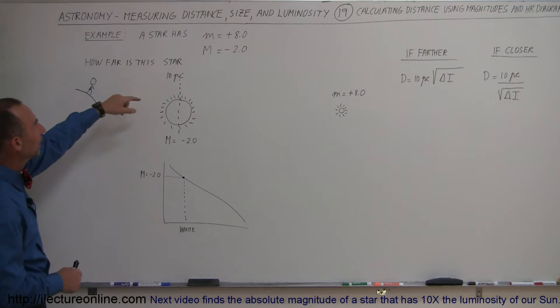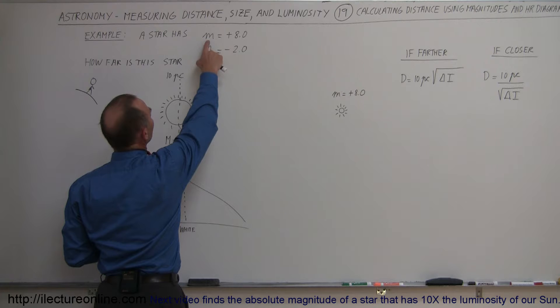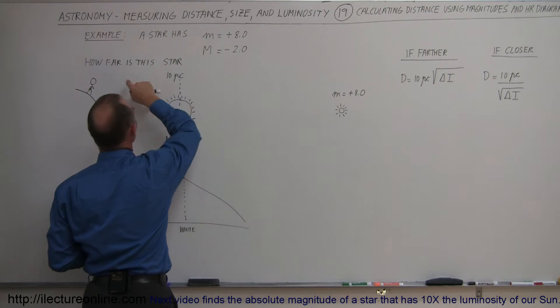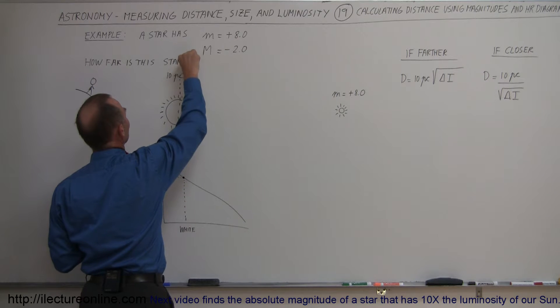Let's say we have a star that has an apparent magnitude of plus 8 and an absolute magnitude of minus 2. How far is this star? And I did a question mark there.